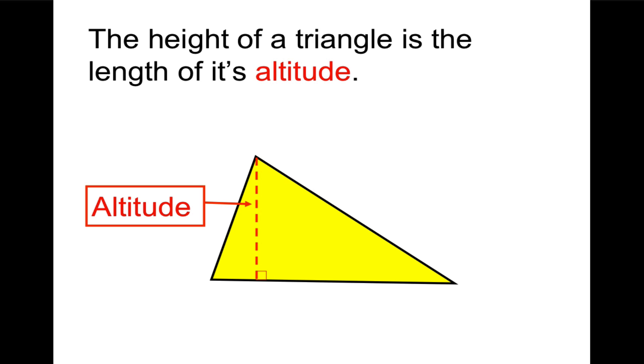The altitude is the height. The height of a triangle is the length of its altitude. So if that's the altitude, it also is the height. And again, the altitude is perpendicular to one of the three sides of the triangle, and we're going to call that side the base. And here comes our area formula.